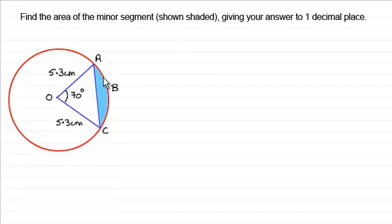To find the area of a segment, I'm going to work out the area of sector OABC and then subtract the area of triangle OAC.